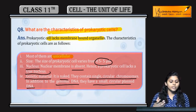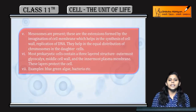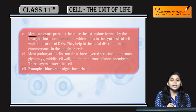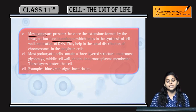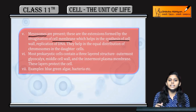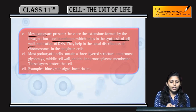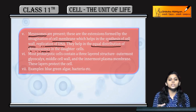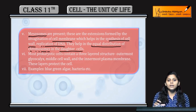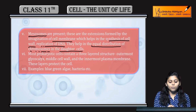Next, mesosomes hote hain. Mesosomes kya hain? Ye invagination hai plasma membrane ki. Ye help karte hain in the synthesis of cell wall, replication of DNA, aur daughter cells mein chromosomes ki equal distribution mein.